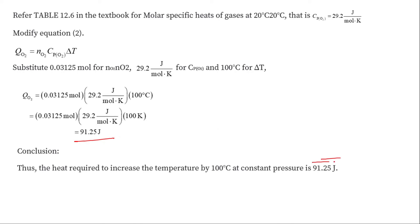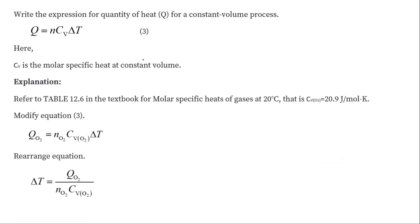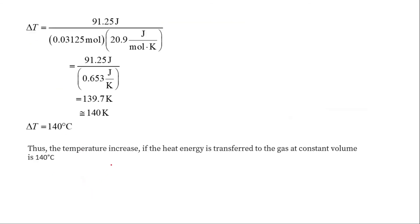Now we find the change in temperature if the same heat is applied to the gas at constant volume. Using Q = nCvΔT, the value of Q is known, the number of moles is known, and the value of Cv is given — as per the table, Cv equals 20.9 joules per mole kelvin. Substituting these values, ΔT = Q / (n × Cv), which comes out to be 140 kelvin.